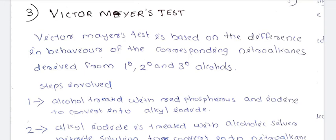We will go to the comparison section. We are discussing the Lucas Test and the distinction of primary, secondary, and tertiary alcohols. There are 3 methods: catalytic dehydrogenation, Lucas Reagent, and the 3rd method is Victor Meyer's Test.